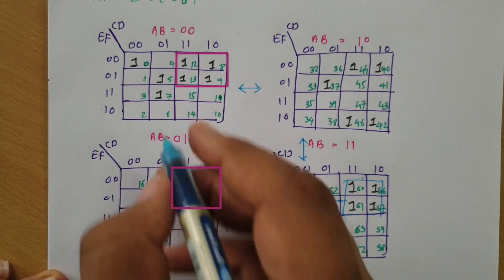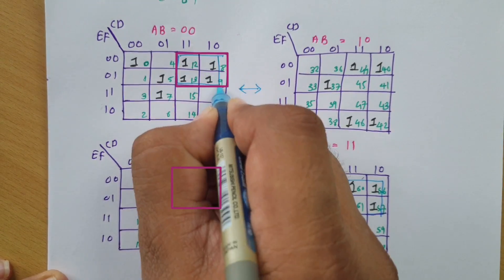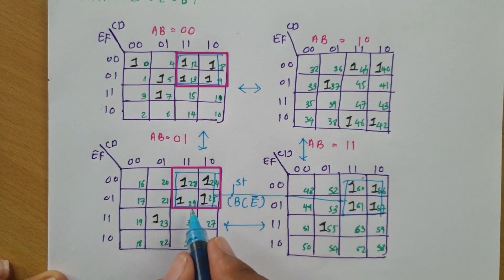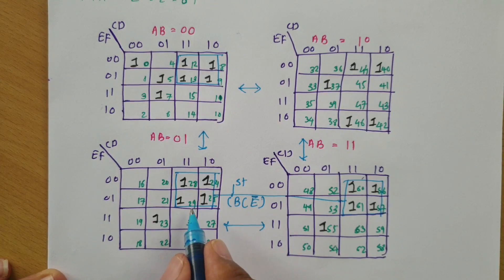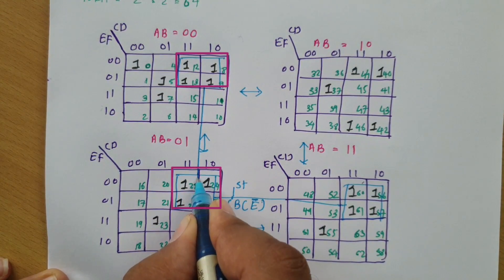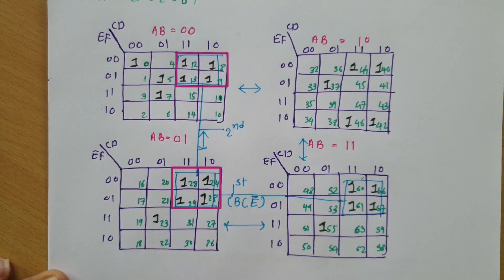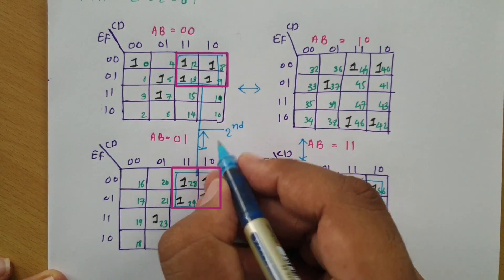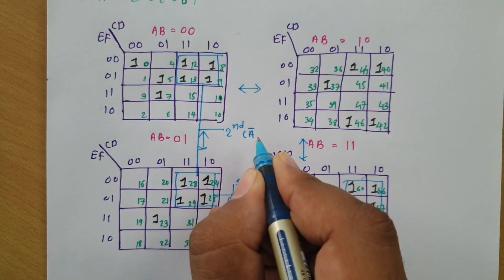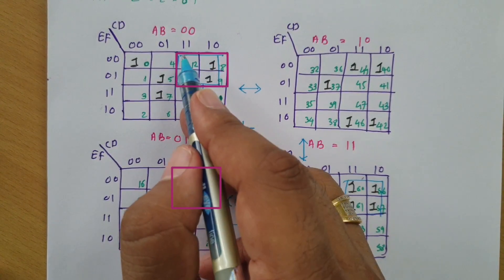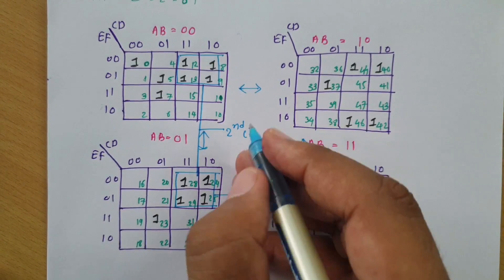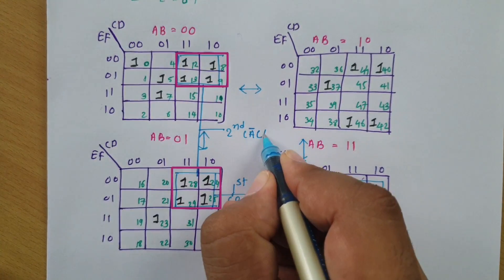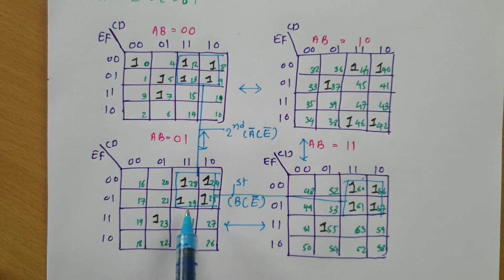Next, this four and this four can combine with each other, forming my second group of eight cells. In this second group, AB is 00 and 01, so A is common at 0 meaning Ā. Then CD is 11 and 10, so C is 1. For EF: 00 and 00, so E is 0 meaning Ē. So the second group is Ā·C·Ē, covering these eight cells.